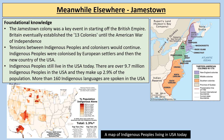To give a bigger picture: the Jamestown colony was a key event in sparking off the British Empire. Britain eventually established 13 colonies in North America, which they held until the American War of Independence — you can see a map of those 13 colonies, including New York, Pennsylvania, Virginia, North Carolina, South Carolina, and Georgia. Tensions between indigenous peoples and colonisers continued; indigenous peoples were colonised by European settlers and then the new country of the USA. Indigenous peoples still live in the USA today — there are over 9.7 million, making up 2.9% of the population, and more than 160 indigenous languages are spoken there today.